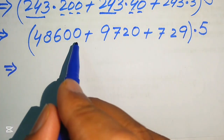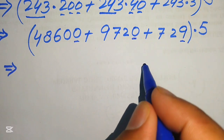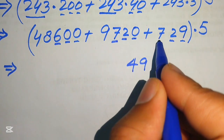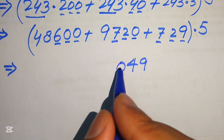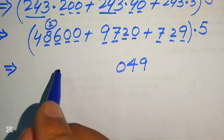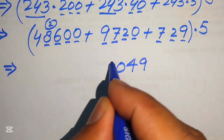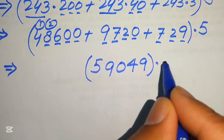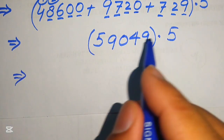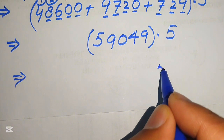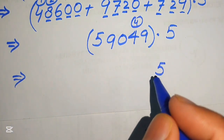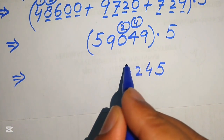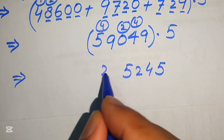We add all partial products together: 48,600 plus 9,720 plus 729 equals 59,049. Then multiplying 59,049 by 5: 5 times 9 is 45, write 5 carry 4; 5 times 4 is 20 plus 4 is 24, write 4 carry 2; 5 times 0 is 0 plus 2 is 2; 5 times 9 is 45, write 5 carry 4; 5 times 5 is 25 plus 4 is 29. This gives us 295,245.